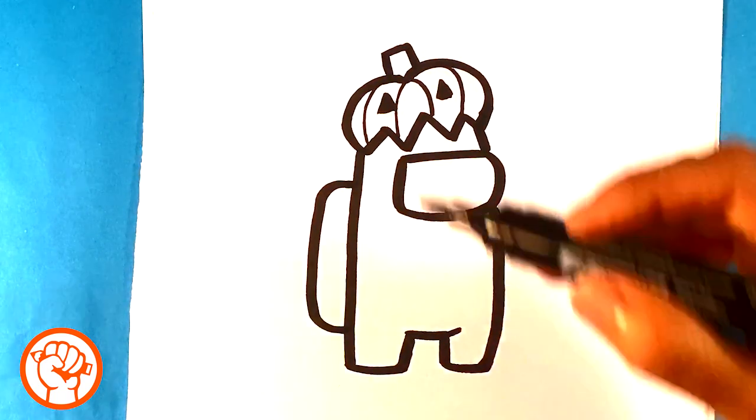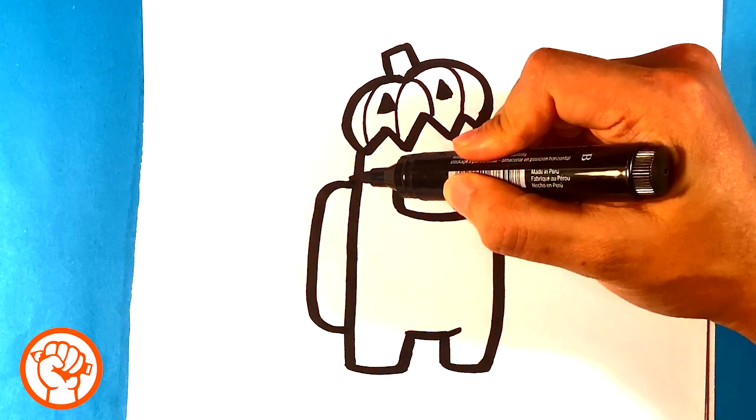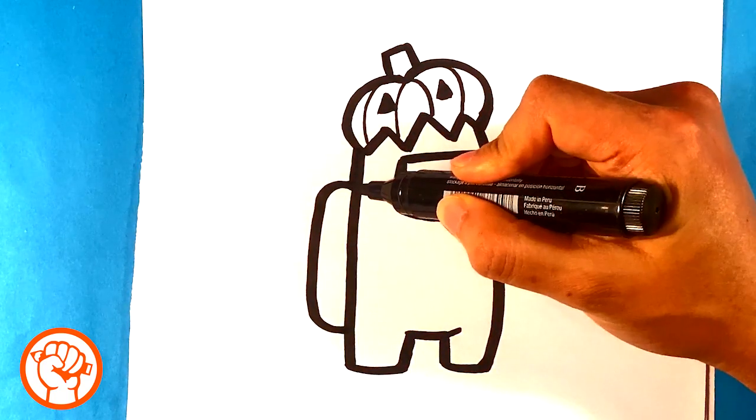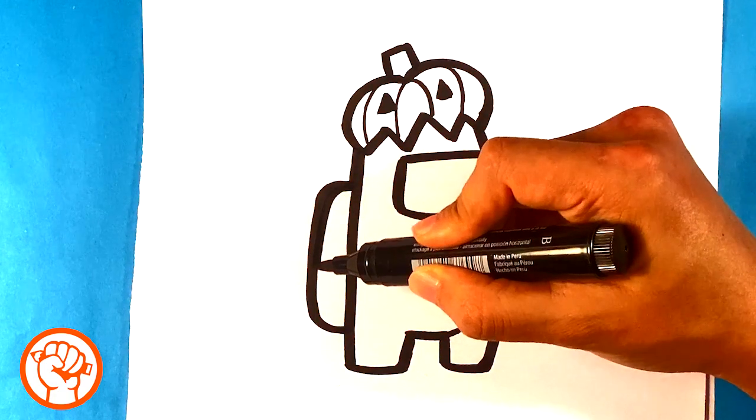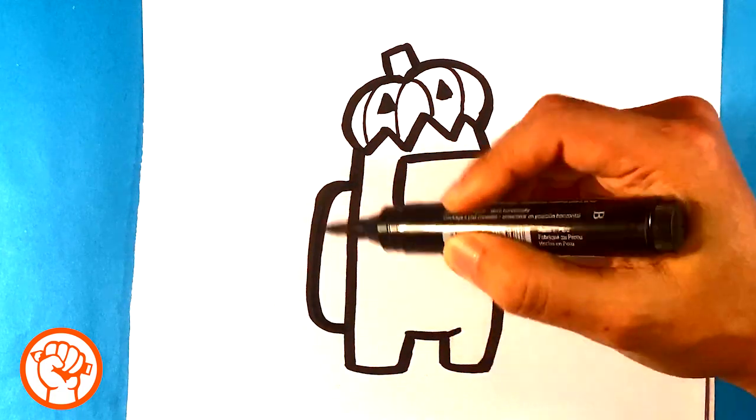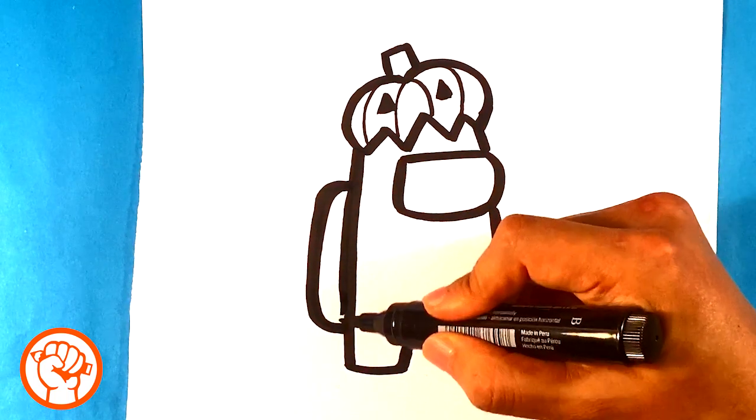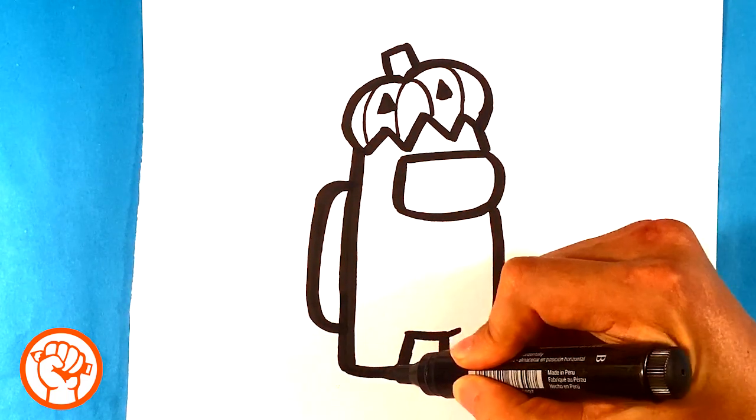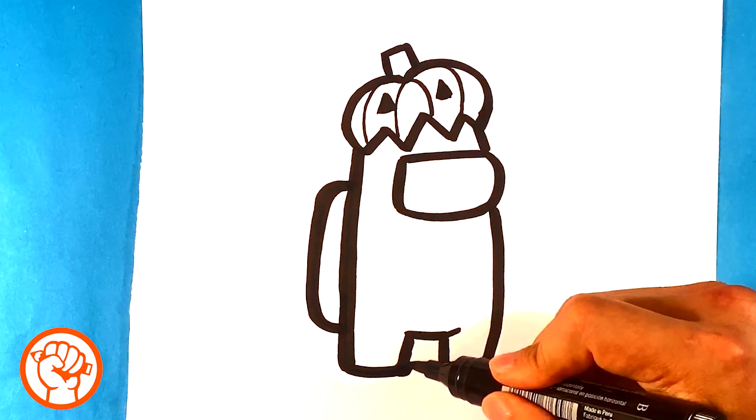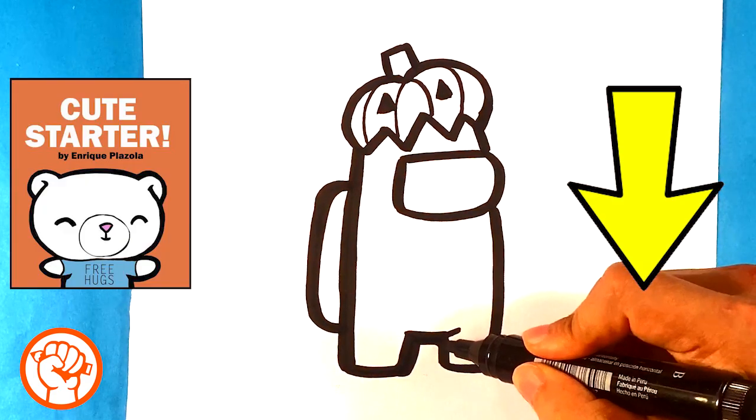Now I'm going to thicken the lines throughout most of this drawing here. The reason I'm doing that is I want it to match the animation of the game. So just kind of thicken it out, maybe twice as much, maybe one and a half as much.